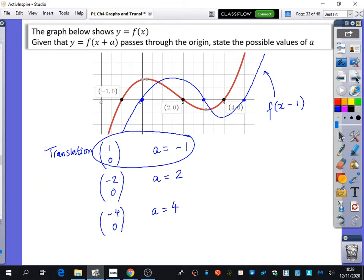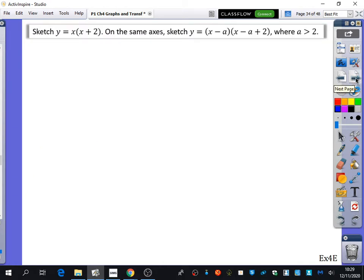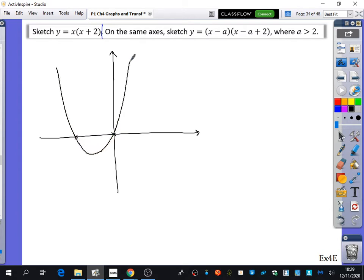So we're going to just do one more example. This one says sketch x brackets x plus 2. And on the same axis, sketch y equals x minus a, x minus a plus 2, where a is greater than 2. Well, let's just do the first half of the question. First of all, let's sketch this graph. This is a quadratic that crosses at 0 and minus 2. So it's going to cross at 0 and minus 2.